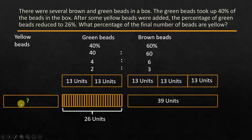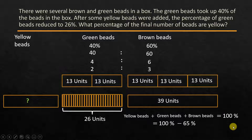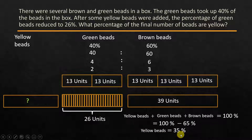Remember, if we divided all three beads into 100 units, then this was 26 units. And percentage is always based on 100. So if we were dividing these three into 100 units, this is 26 units, this is 39 units. So yellow beads would be 100 minus (26 plus 39). Yellow beads plus green beads plus brown beads equals 100%. So 39 plus 26 gives 65%. Yellow beads is equal to 100 minus 65, so yellow beads is equal to 35%.